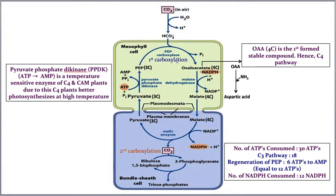Rubisco is hidden inside the bundle sheath because the bundle sheath, with Kranz anatomy, is impermeable to gases — it does not allow oxygen or carbon dioxide to pass through directly. Malate enters, and after entering the bundle sheath, it releases carbon dioxide for use by Rubisco.